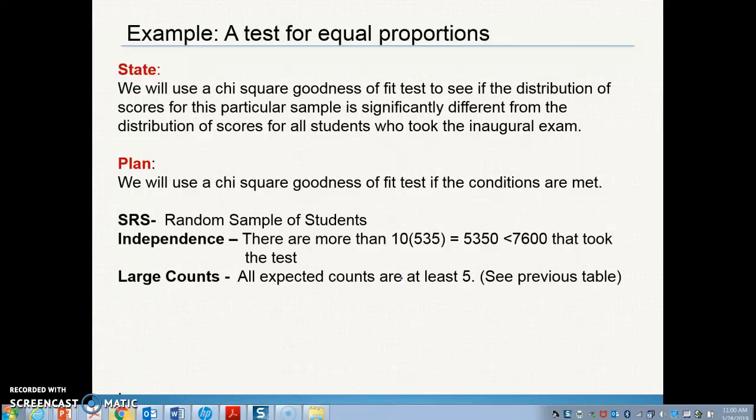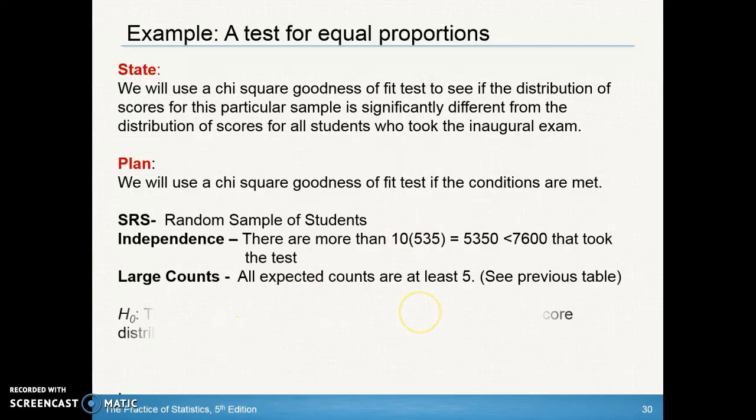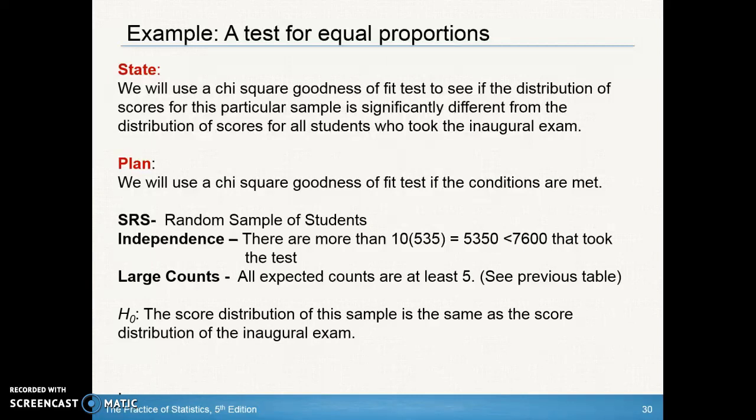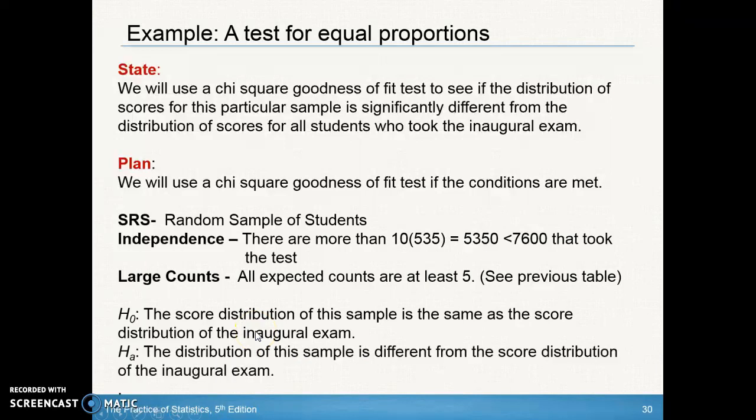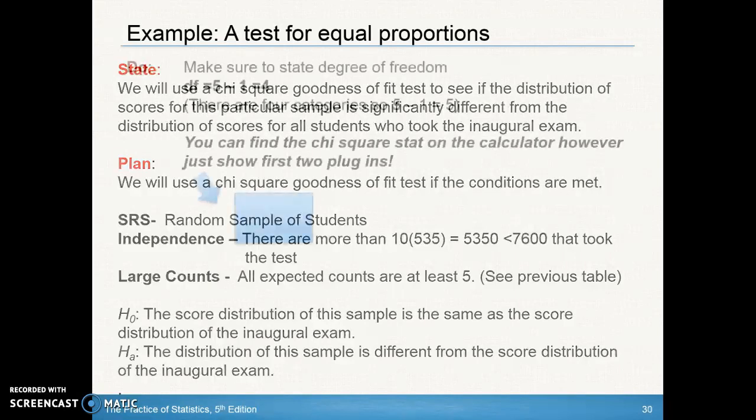Now let's go ahead and take a look at our null and alternative. First our null, remember, is always going to be assuming that the distributions are the same. So we're assuming that the distribution of this sample is the same as the score of the distribution of the inaugural exam. So the two distributions are the same. The alternative is always going to be that the distribution of this sample is different from the score distribution. And it doesn't mean that all of them are different. It just could mean that one of the counts is different.